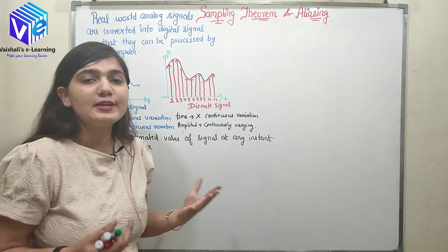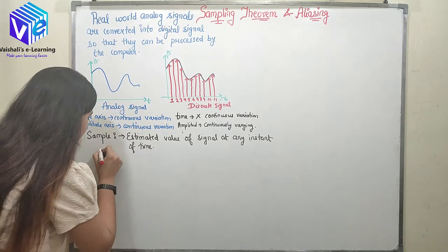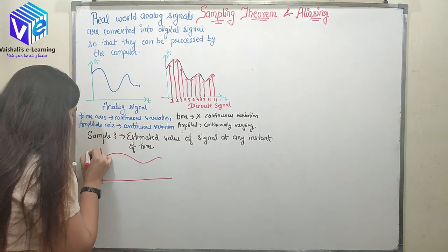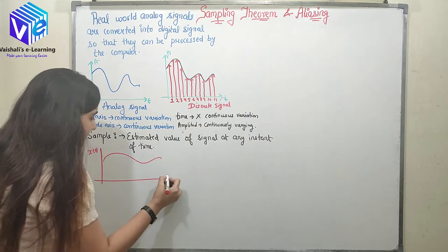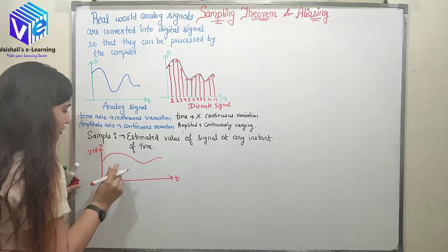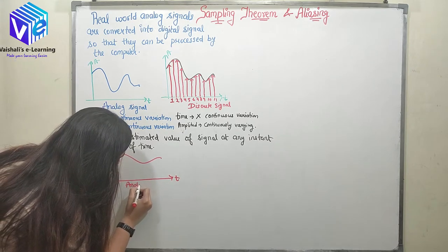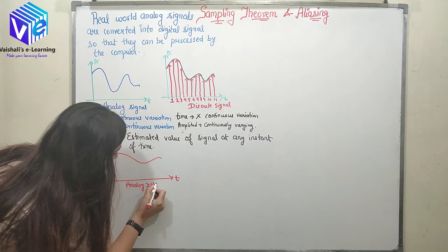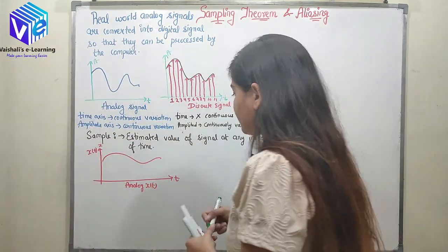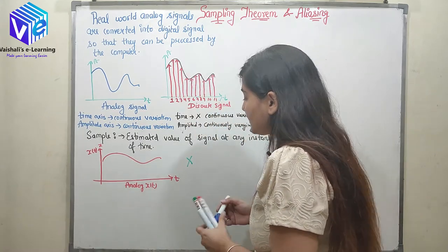Now the question is how we can do sampling. Let's suppose we have a signal — this is my X(T), and this is T. This represents the value of X. This is my continuous signal, so I am terming it as analog X(T). Now what can I do? I can multiply this signal with an impulse train.